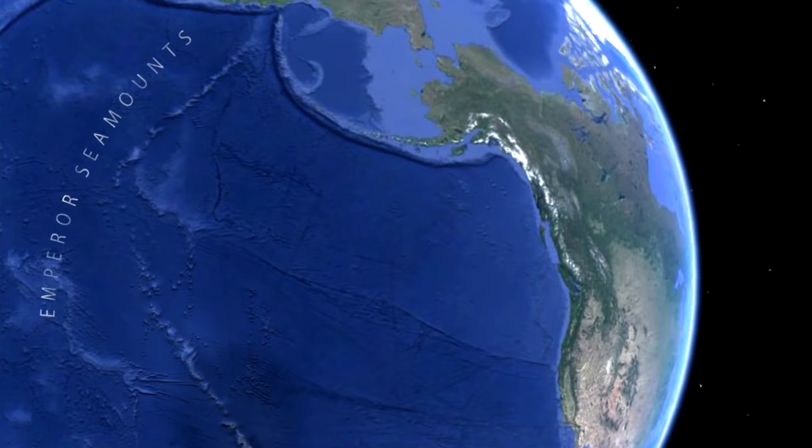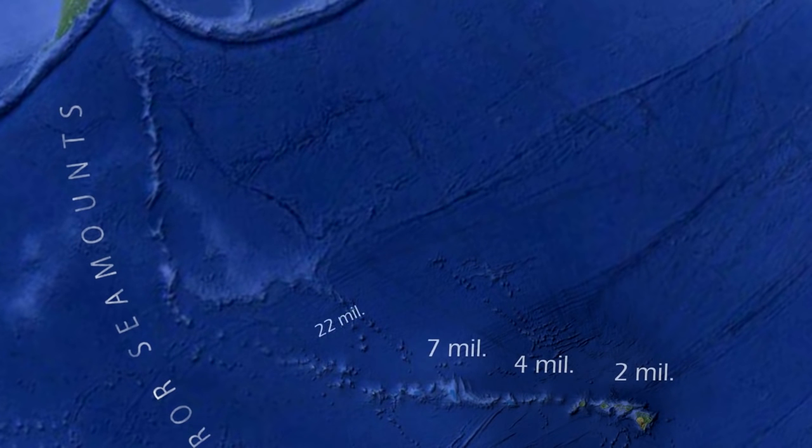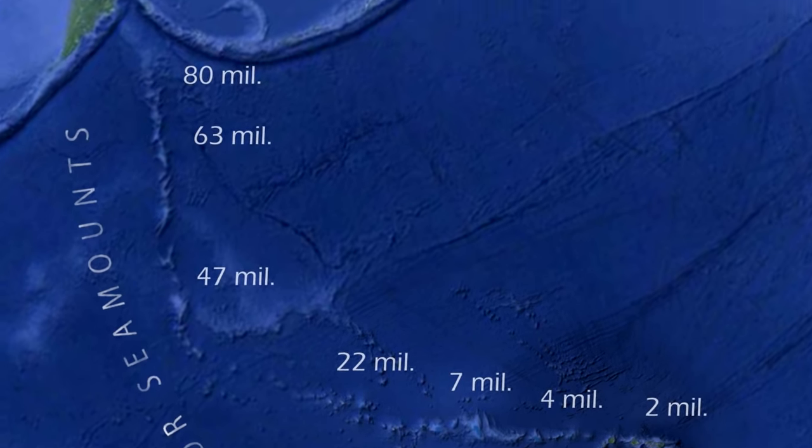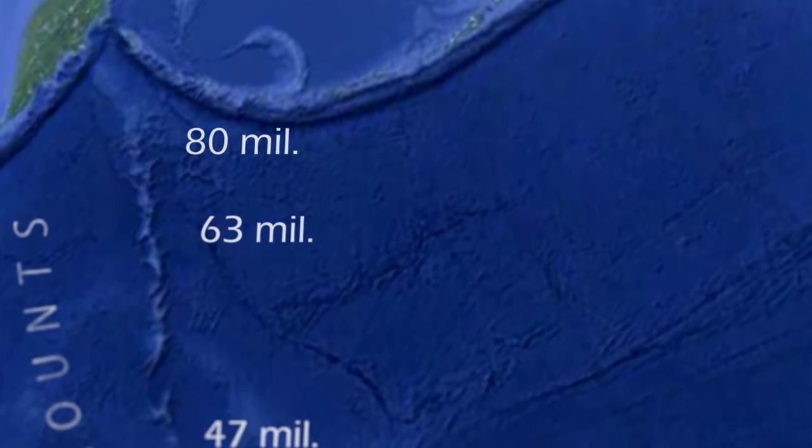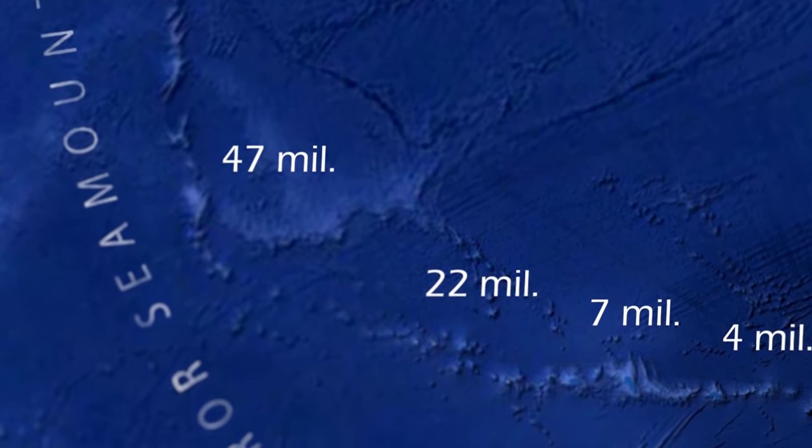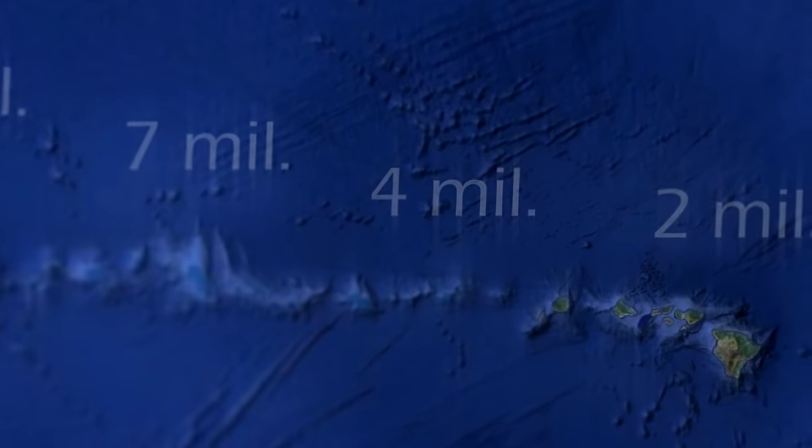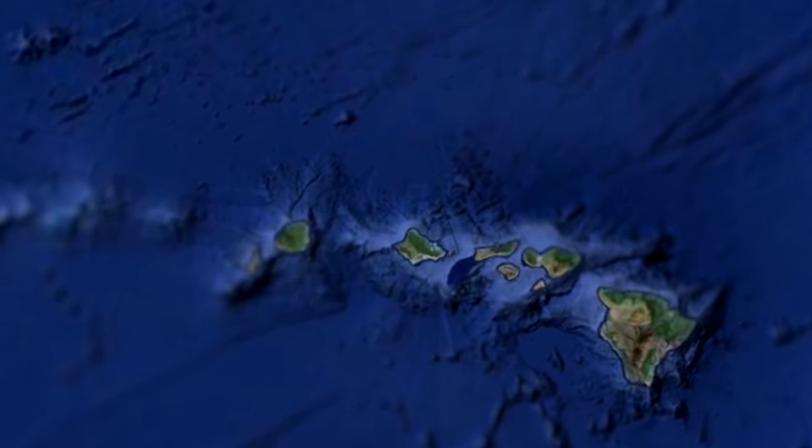Now let's consider the old earth model. Radiometric dating of rocks from many of these islands and seamounts indicate steadily increasing ages up to about 80 million years. Islands formed over millions of years lead to very different expectations. Slow movement of the crust over millions of years should result in large differences in the degree of erosion, the amount of subsidence, reef thickness, and reef fossils. So what do we find?